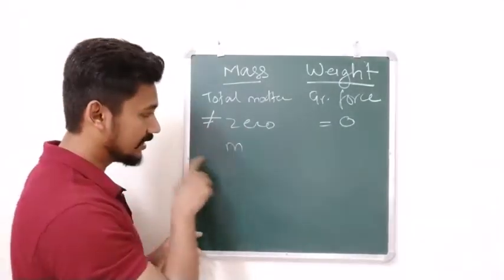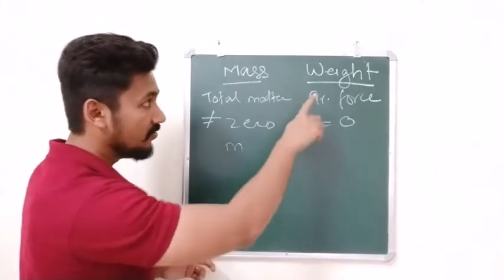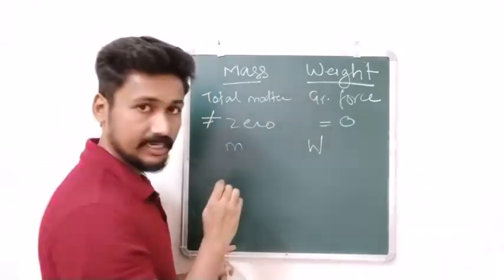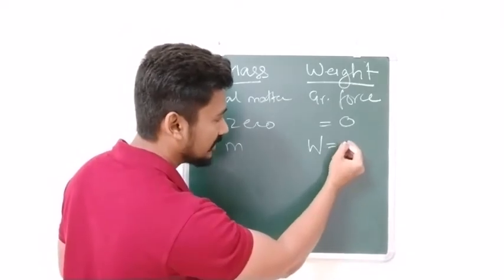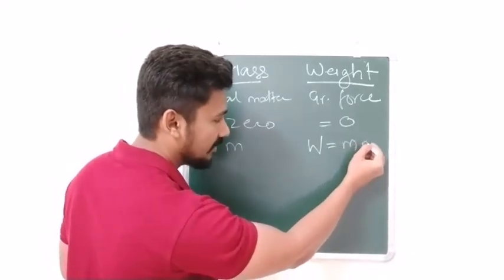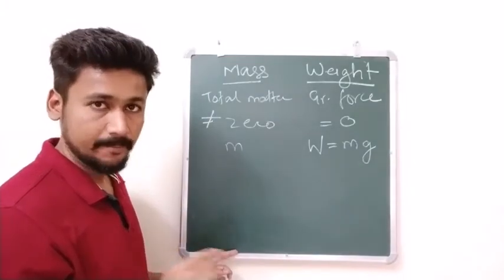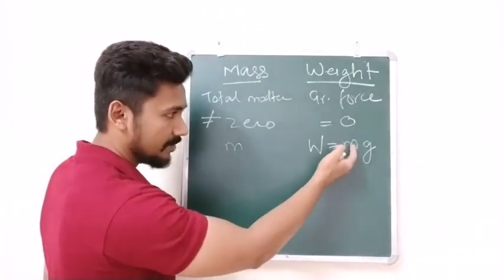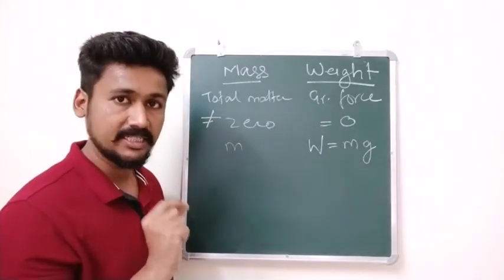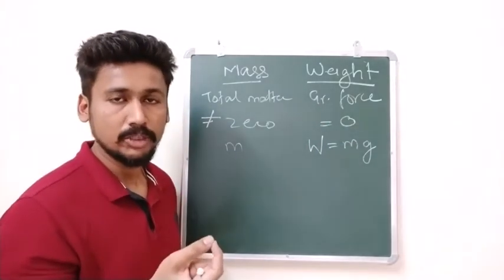Then mass is given by the symbol small m. Weight will be given by the symbol capital W. And what will be the formula for weight? Formula for weight will be very simple. Mass of the object multiplied by acceleration due to gravity. So how do you find the weight of an object? You just multiply the mass into the acceleration due to gravity.